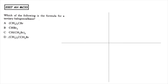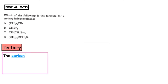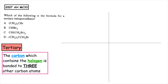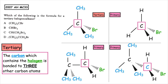This past paper question is from the Advanced Higher 2007 multiple choice question 33: which of the following is the formula for a tertiary haloalkane? What we have to do is know the definition — a tertiary haloalkane is one where the carbon which contains the halogen is bonded to three other carbon atoms. I would suggest drawing each molecule out, and we can see that A is our tertiary monohaloalkane as the carbon which contains the halogen is bonded to three other carbon atoms.